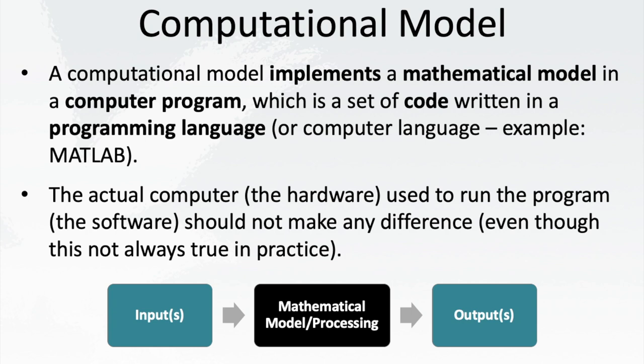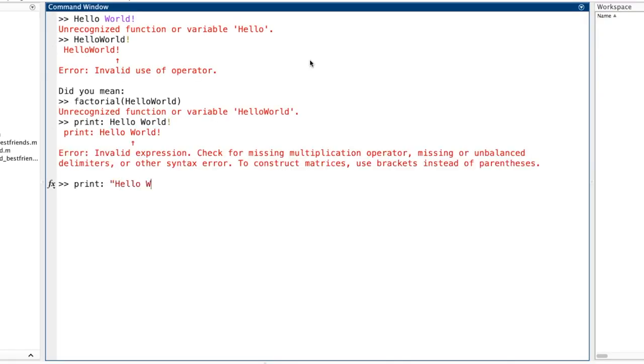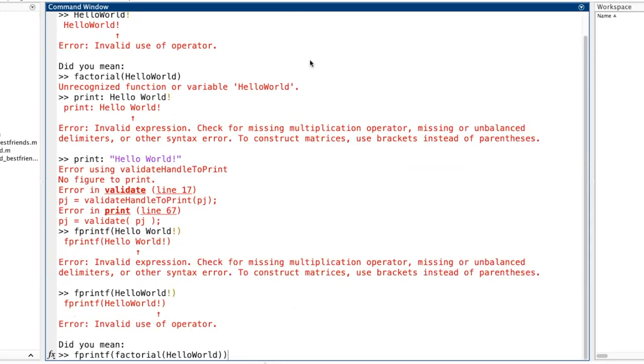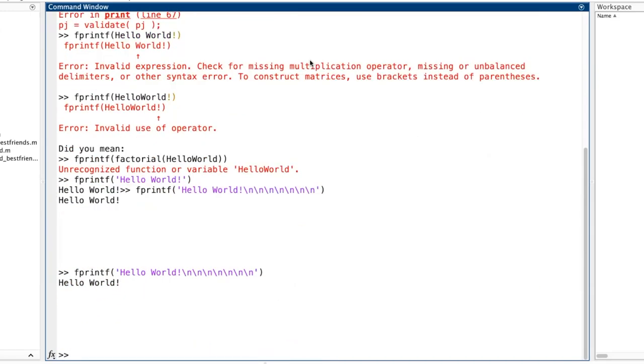A computational model has to have some type of mathematical model behind it. Writing a simple program like Hello World is not an example of a computational model because there's no underlying mathematical model.